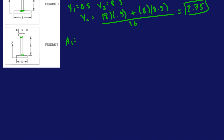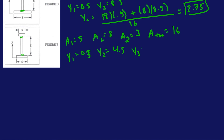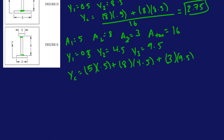For Figure E: A1 is 5; A2 is 8; A3 is 3; total is 16. Y1 is one half. Y2 is 4.5. Y3 is 9 plus a half, that's 9.5. Weighted average: 5 times 0.5 plus 8 times 4.5, and so on over 16. YC should give you 4.4.